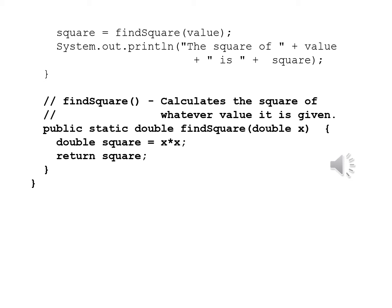Now we write the method findSquare. The comment for it calculates the square of whatever value it is given. Public static double findSquare double x, and inside double square equals x times x, return square. We close a brace for the method and close a brace for the class.